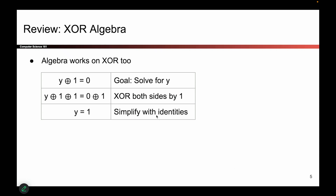You can also do algebra with XOR. For example, if we have an equation with an unknown Y and I want to solve for it, all you have to do is XOR both sides by one. One XOR one is zero, that cancels out, zero XOR one is one, and you get Y is equal to one. You can do this on more complicated equations as well. This is all just a review on how XOR works in case you haven't seen it before.